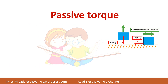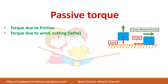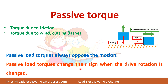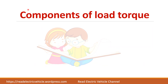Passive torque: if the conveyor moves in one direction, friction opposes that motion. Torque due to friction, wind, or cutting operations all oppose the motion — that is called passive torque. Passive torque changes its sign when the drive rotation is changed, so it always opposes the motion regardless of direction.